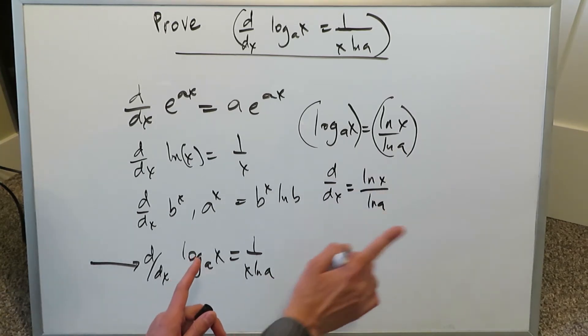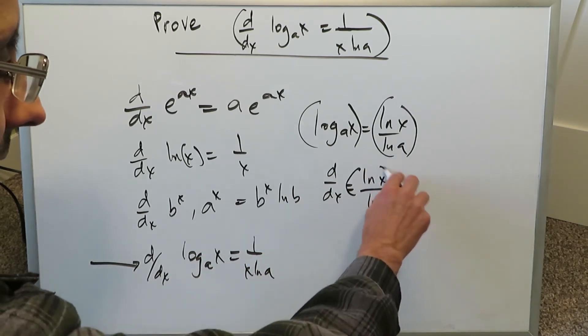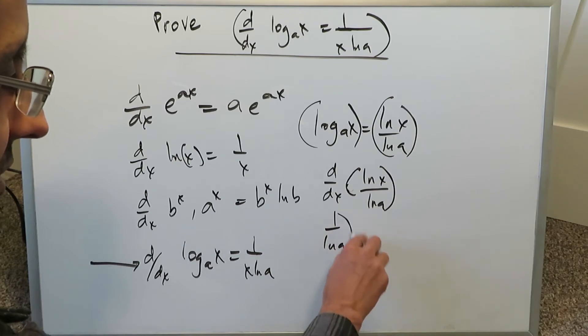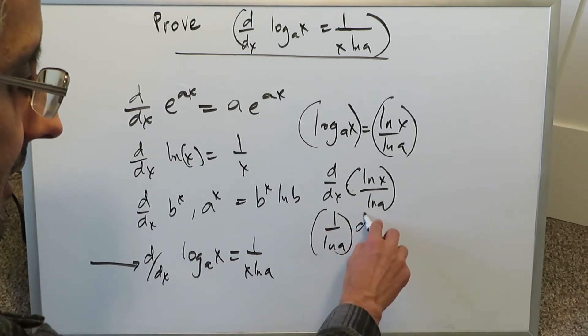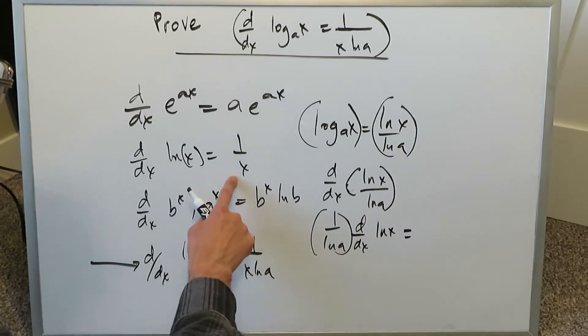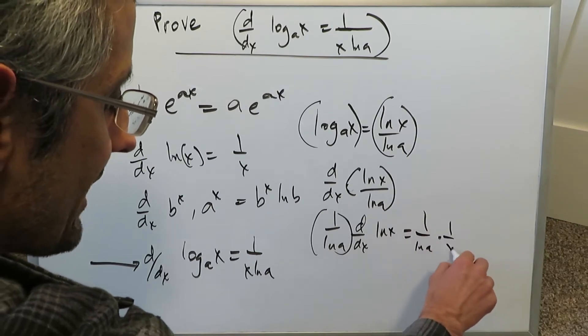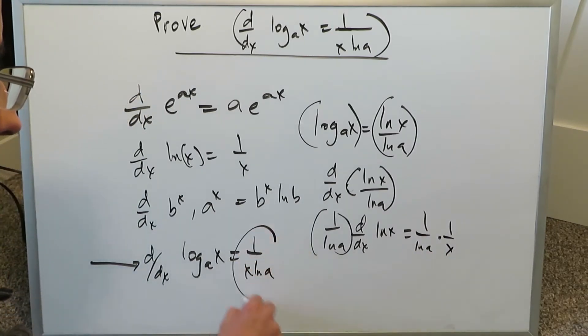Very easily, without thinking about derivation, without thinking about proving, this is no different than you looking at 1 over ln A, a coefficient that has been pushed outside your derivative, and then you're looking at the derivative of ln x. Which, following that scheme over there, you have 1 over ln A times 1 over x. Combine these and you get that.